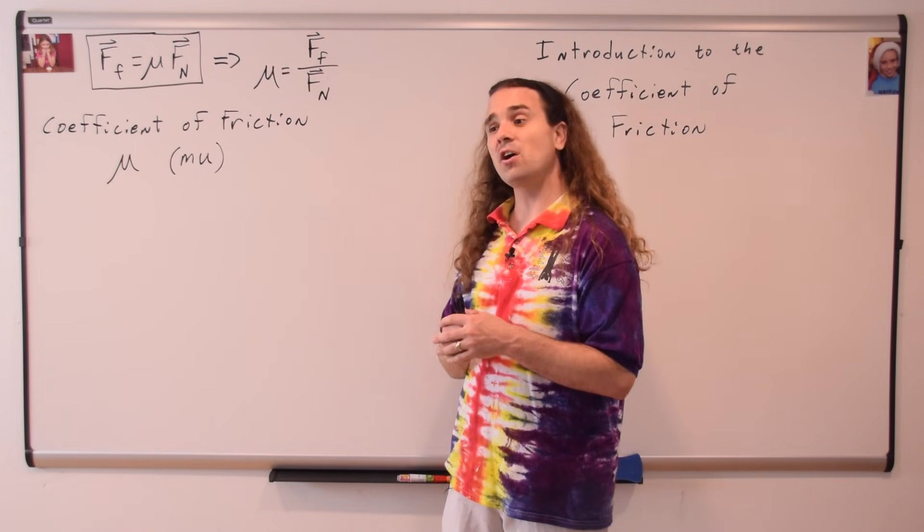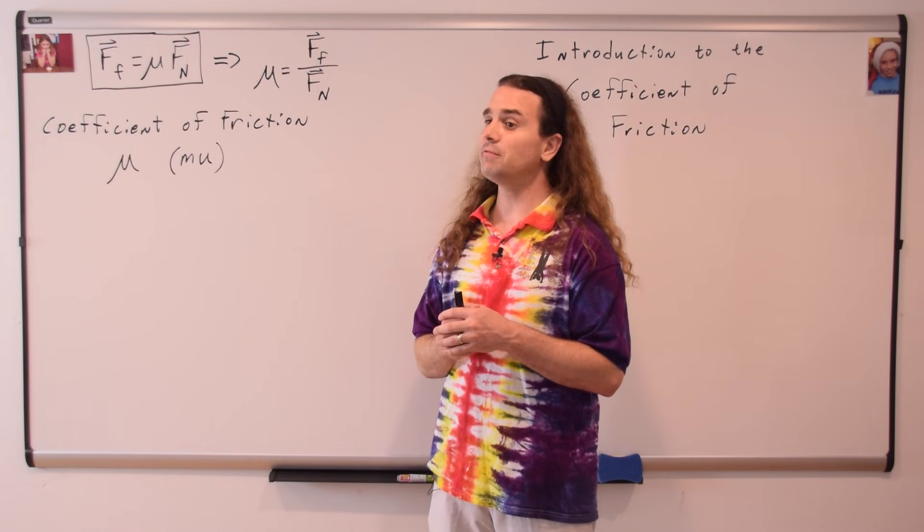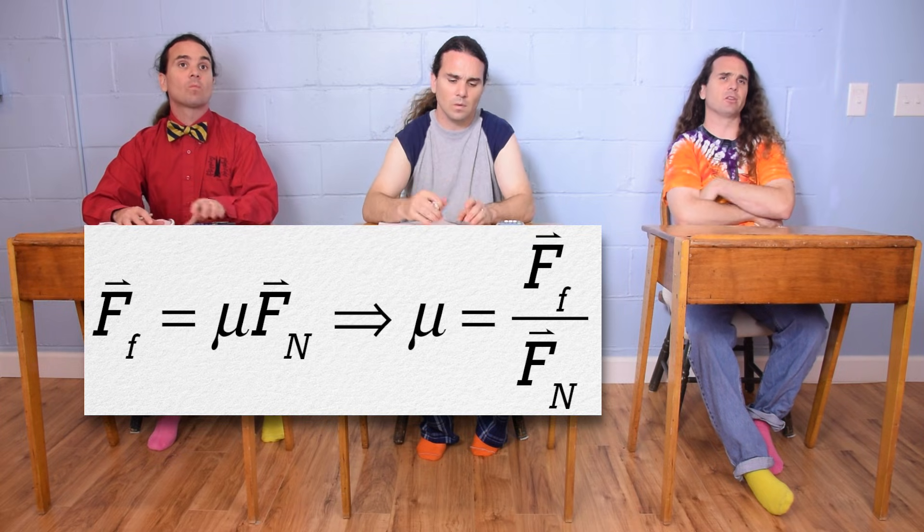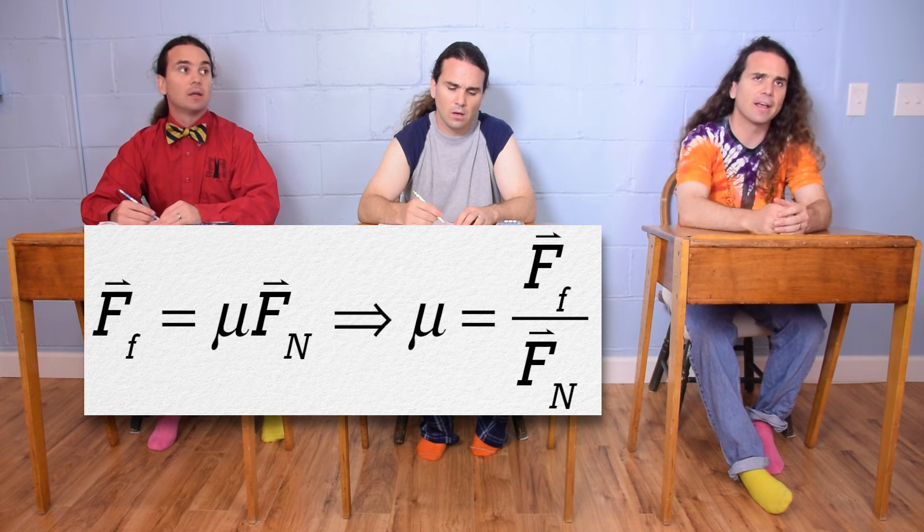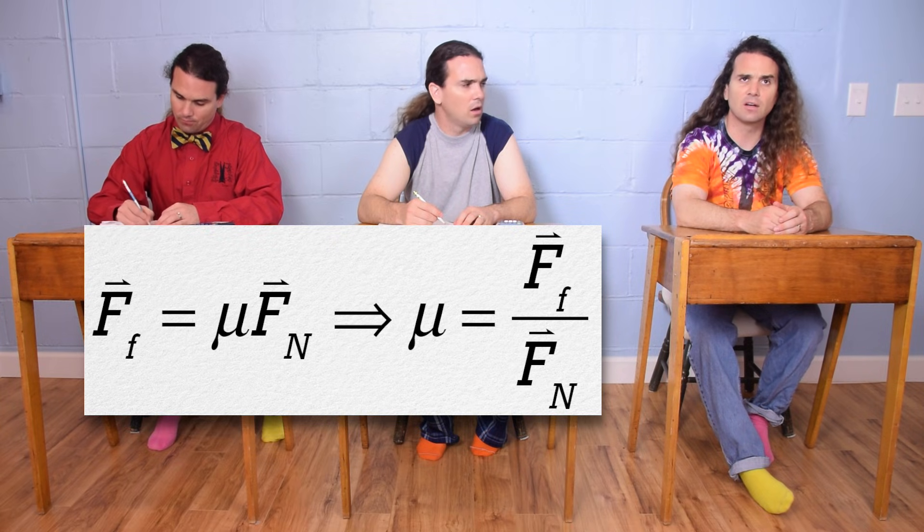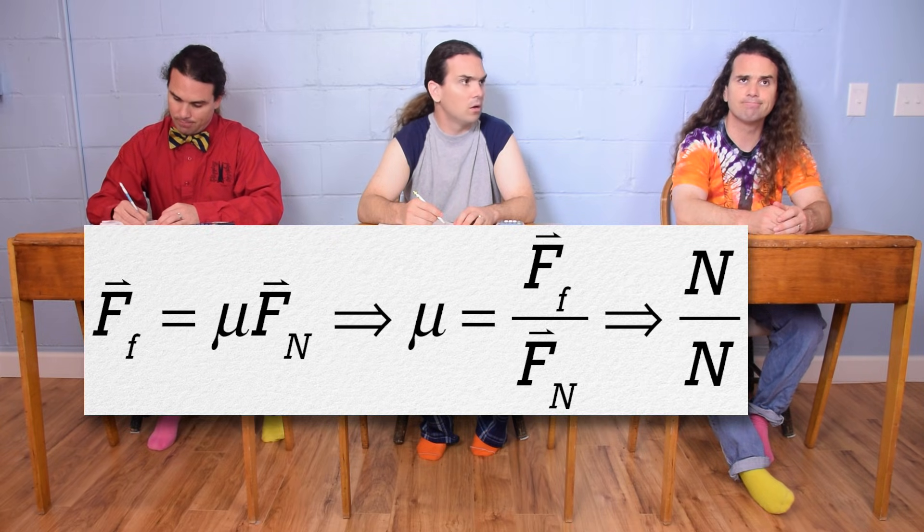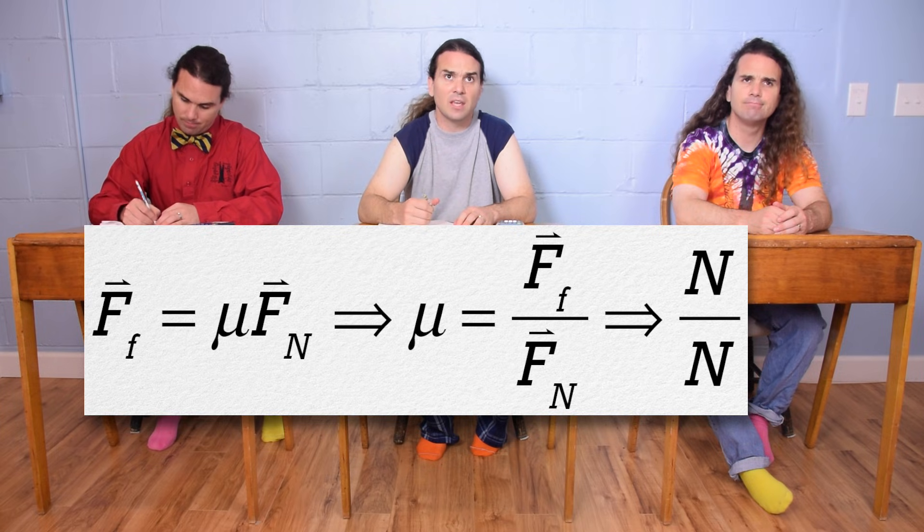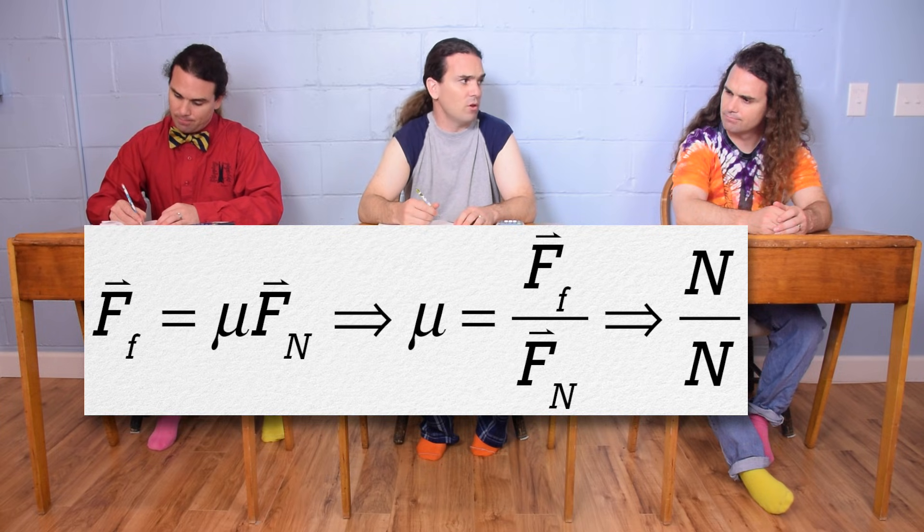Bo, what then are the dimensions for the coefficient of friction? Well, newtons are the dimensions for both the force of friction and the force normal. Therefore, the units for the coefficient of friction are newtons divided by newtons. But then the newtons cancel out, which leaves us with no dimensions.